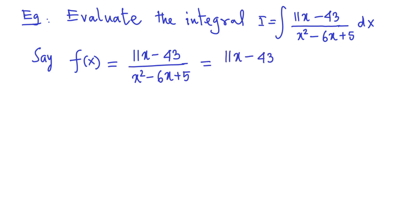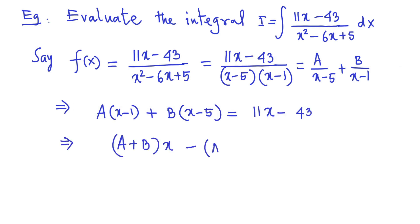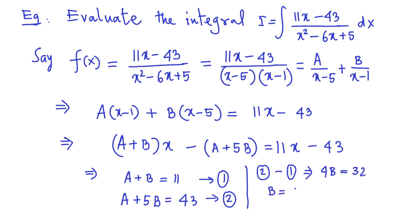Using the so-called method of partial fractions, we can simplify the expression by introducing two constants a and b. We can determine the constants b to be 8 and a to be 3 as you see it here.